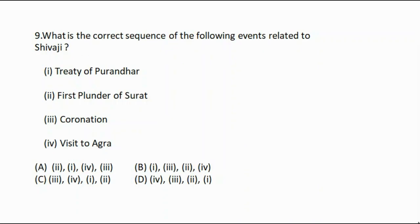Question number nine: What is the correct sequence of the following events related to Shivaji? Option one: Treaty of Purandar, option two: First plunder of Surat, option three: Coronation, option four: Visit to Agra. The correct answer is option A: two, one, four, three.